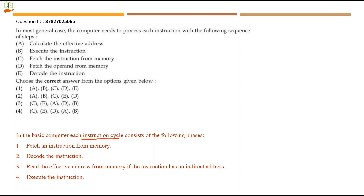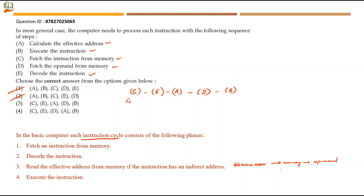Starting with C — fetch an instruction from memory. Then E — decode the instruction. Next, A — calculate the effective address if indirect addressing is used. Then D — fetch the operand from memory. Finally, B — execute the instruction. The sequence is C, E, A, D, B. Both remaining options share C, E, B; the difference is A then D versus D then A, and option 3 is the right answer.